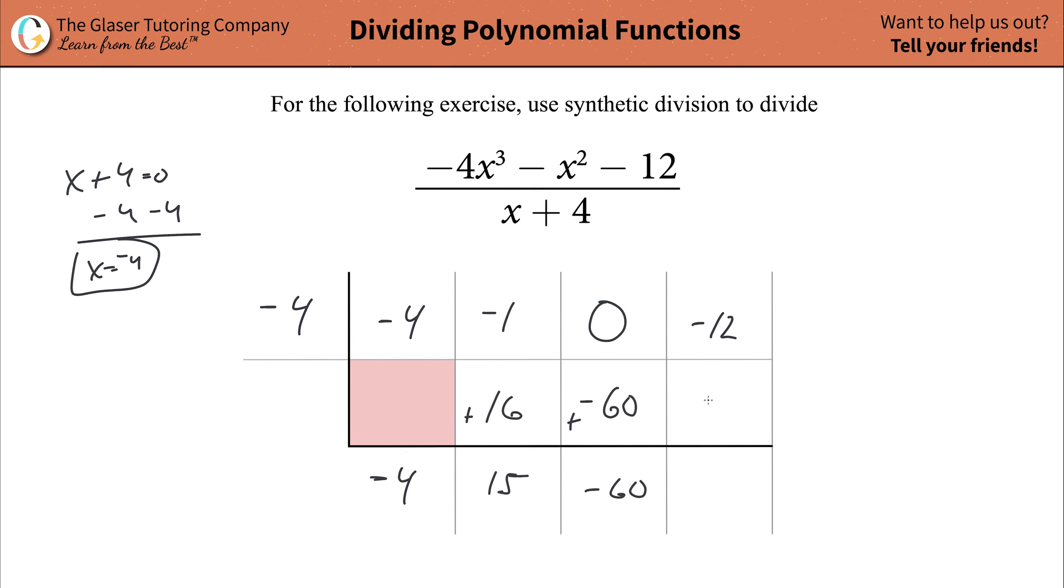And now take the -60, multiply it by the -4. That's going to be a positive, right? And 60 times 4 is going to be 240. And then add the results of that column together. So that's going to be a total of 228. Cool.